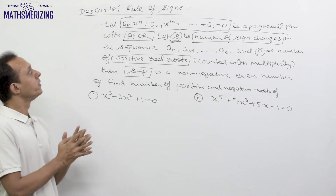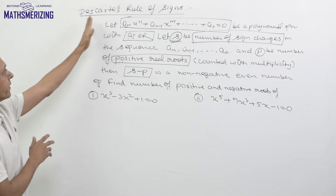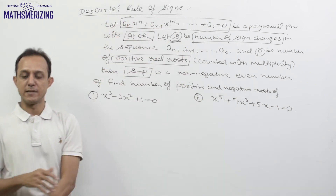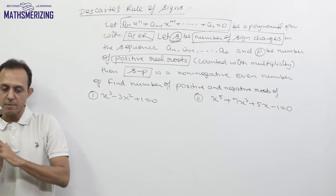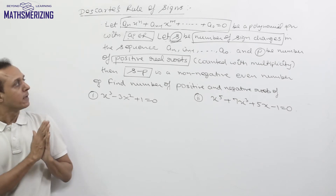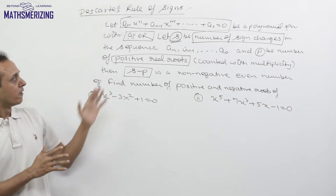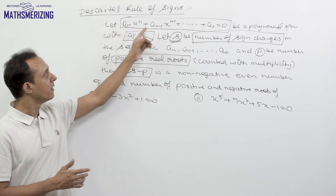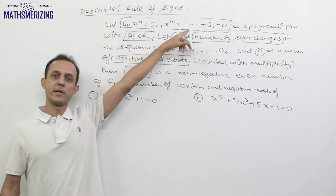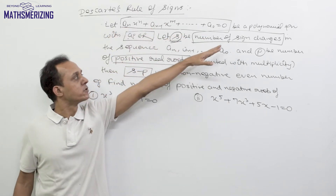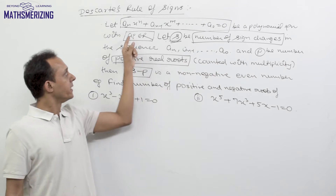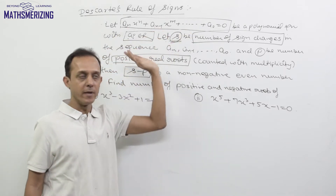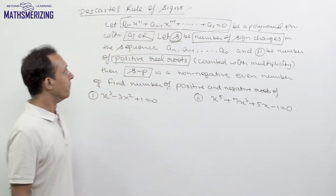Another super easy and super cool theorem in theory of equations is Descartes' Rule of Signs. Now Descartes' Rule of Signs is applicable for any polynomial with real coefficients. Suppose we have this polynomial: a_n x^n + a_{n-1} x^{n-1} + ... + a_0 = 0, where each of the coefficients a_n, a_{n-1}, ..., a_0 are real numbers.